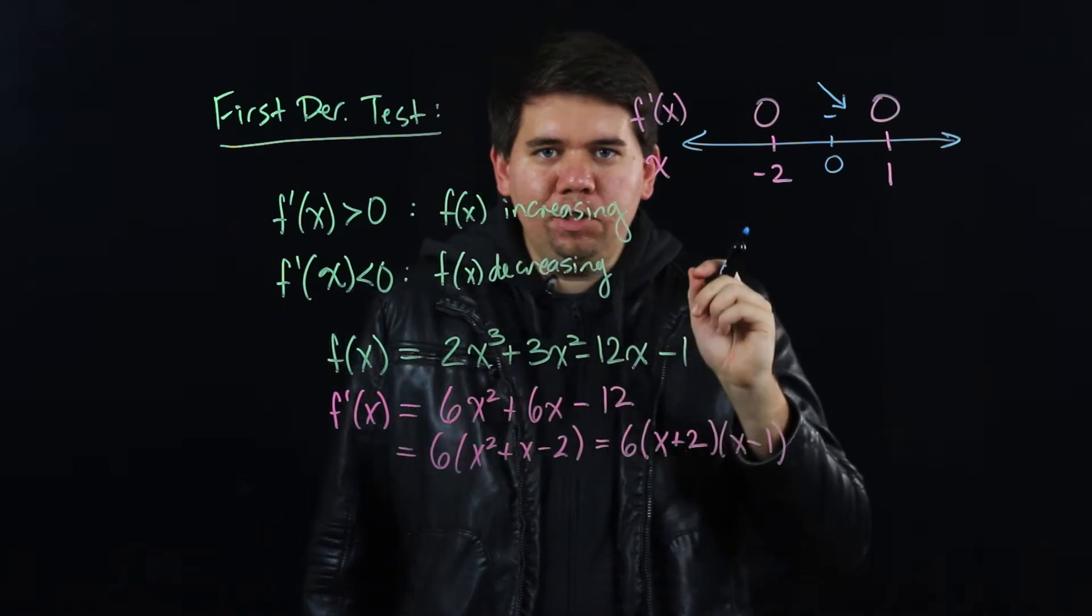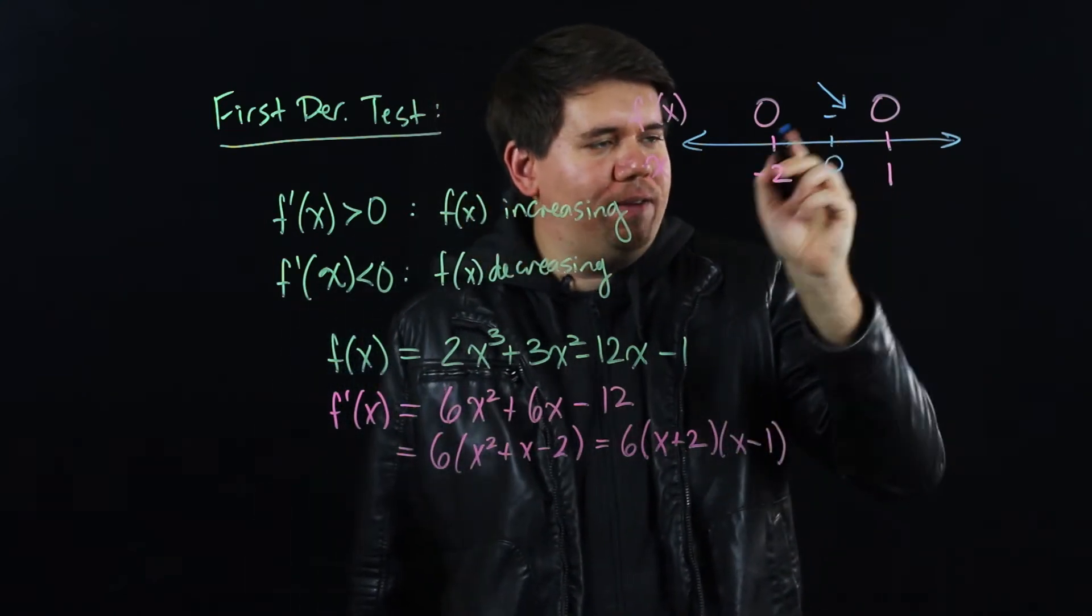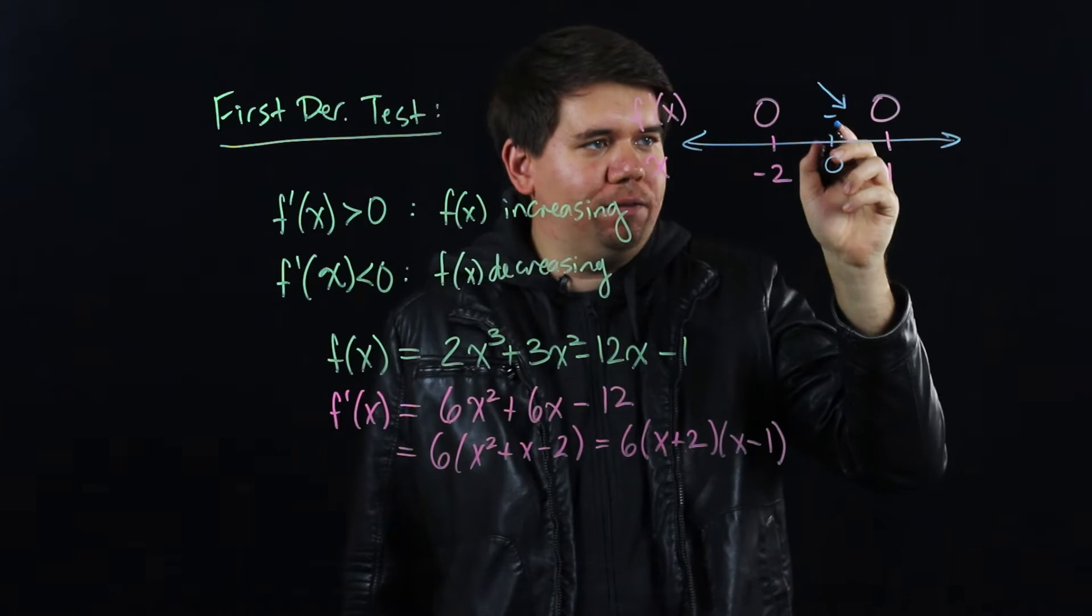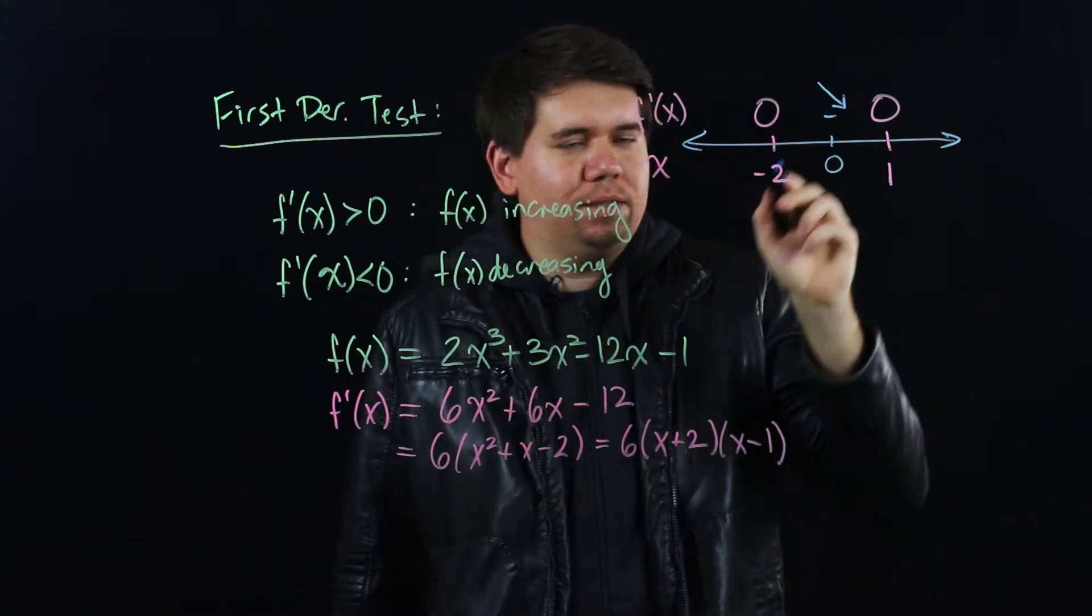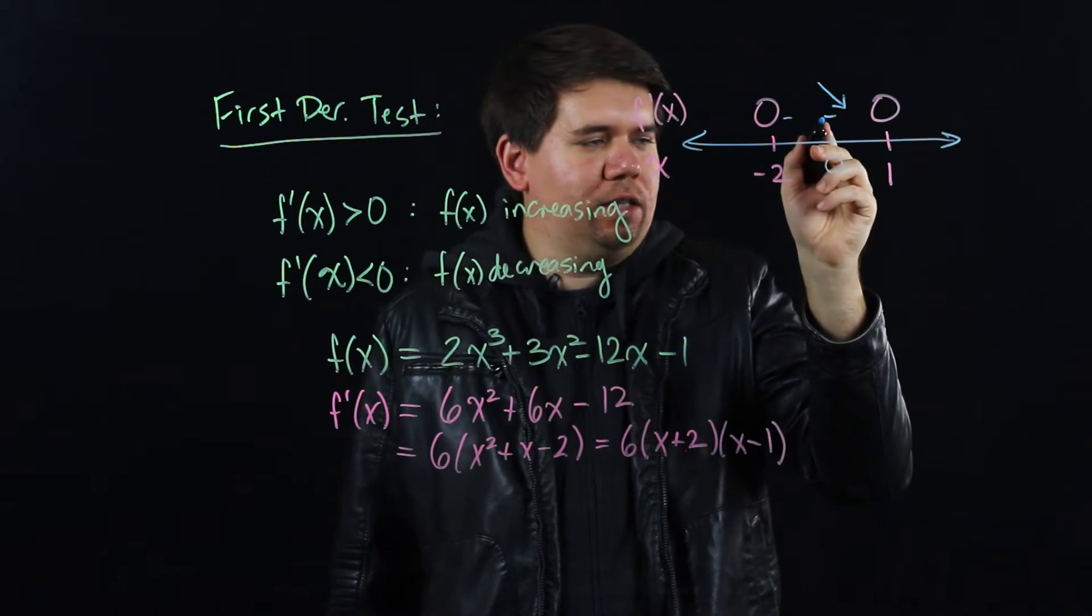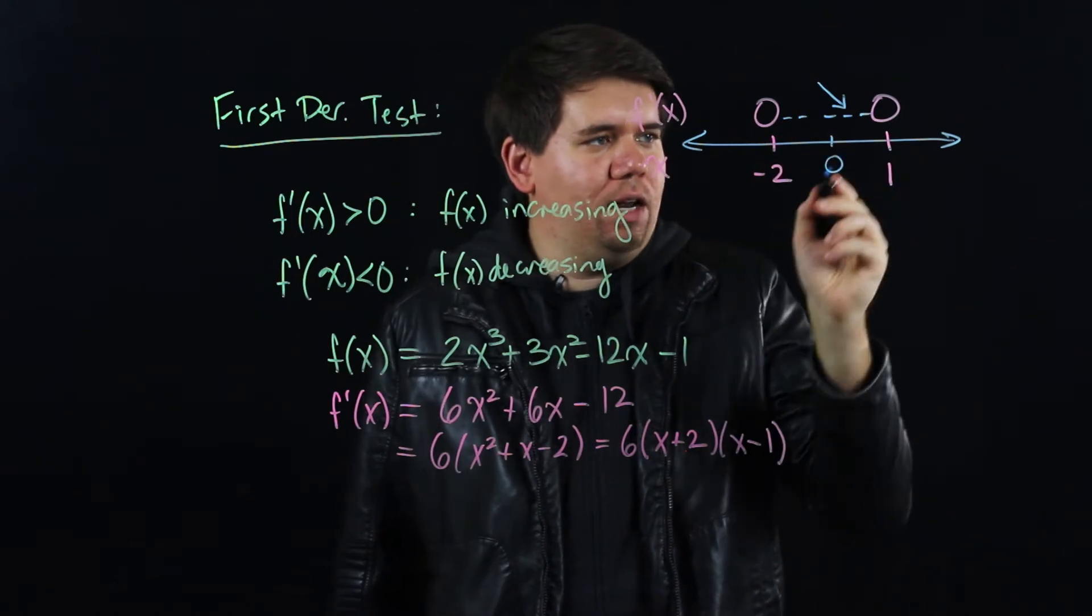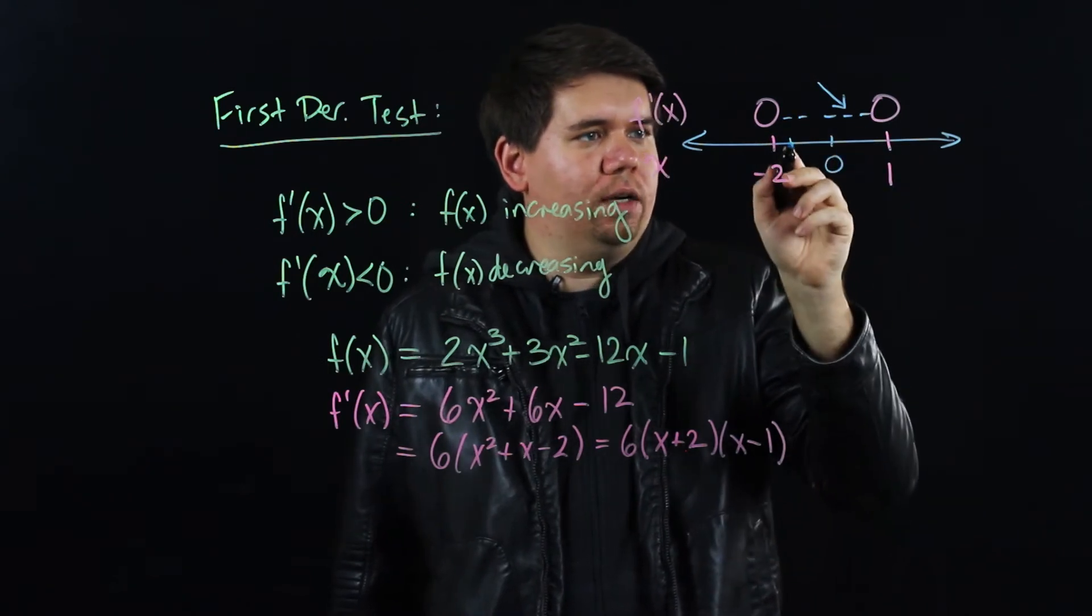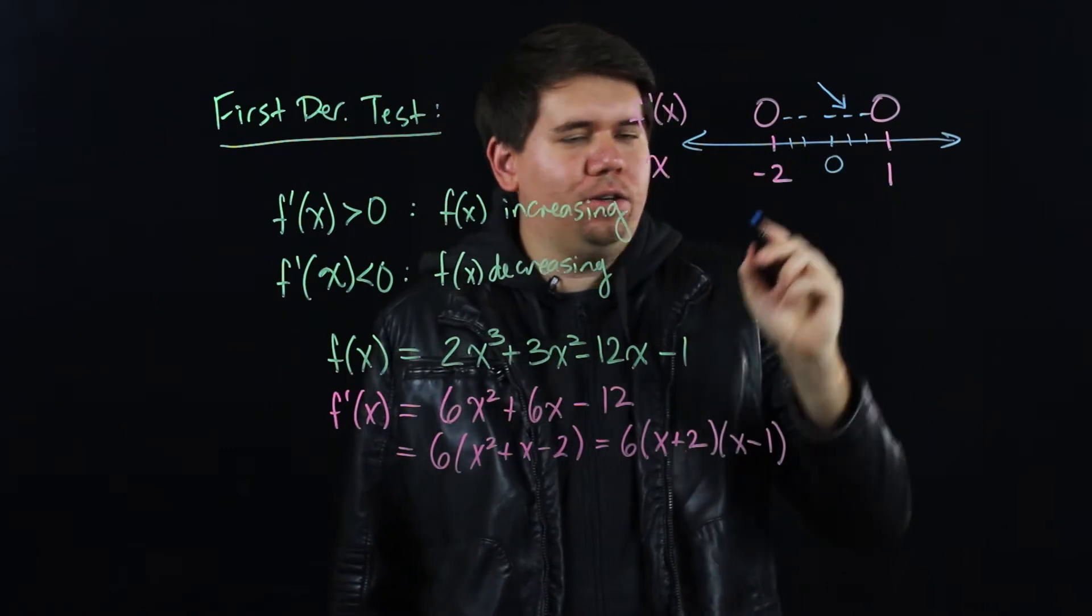But it's not just going to be true for 0, because by the intermediate value theorem, if you have a negative value here, it's not going to become positive again until you cross through one of the zeros. So since this value is negative, all of the numbers between -2 and 1 have a negative value as its derivative.